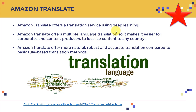For example, if you have developed your website in the English language and you wanted to offer the same content in French, you can use Amazon Translate to do the translation for you and be able to localize content in any different language. Amazon Translate offers more natural, robust, and accurate translation compared to basic rule-based translation methods.